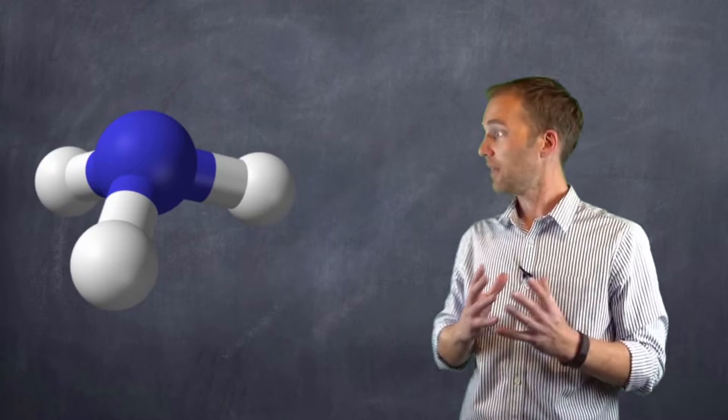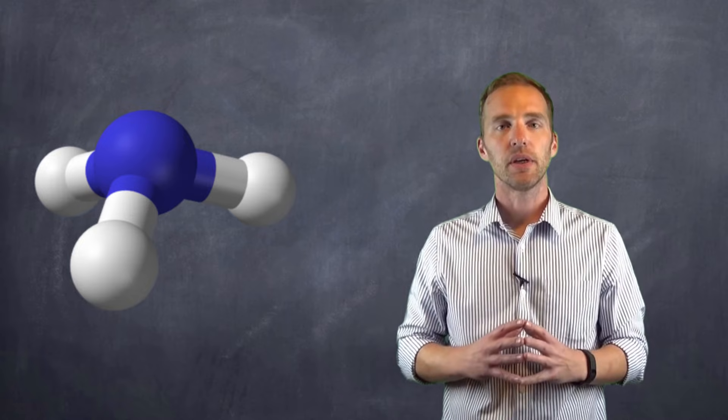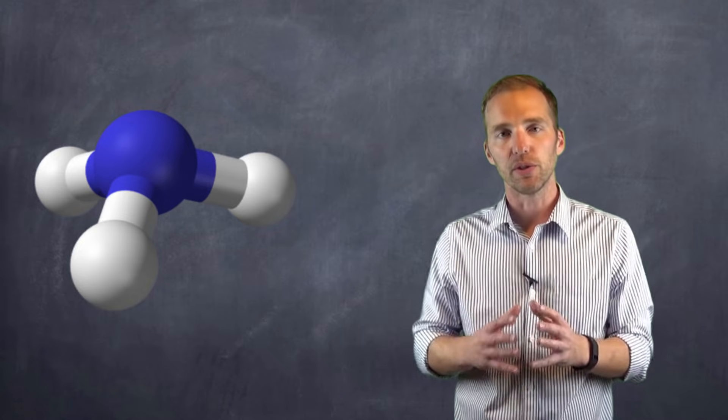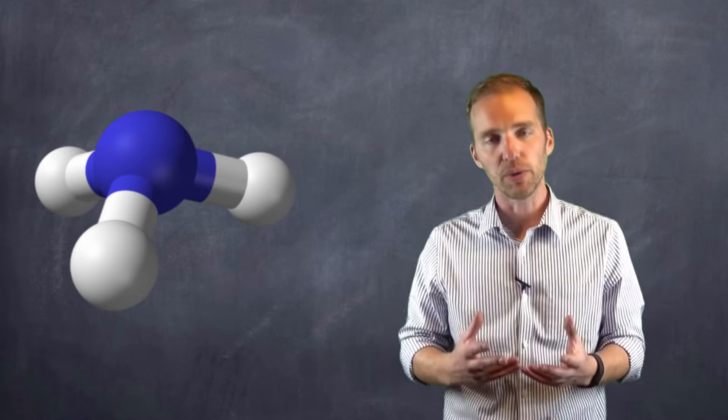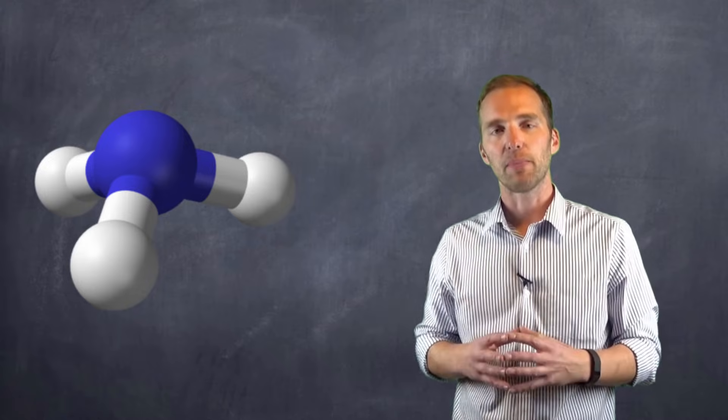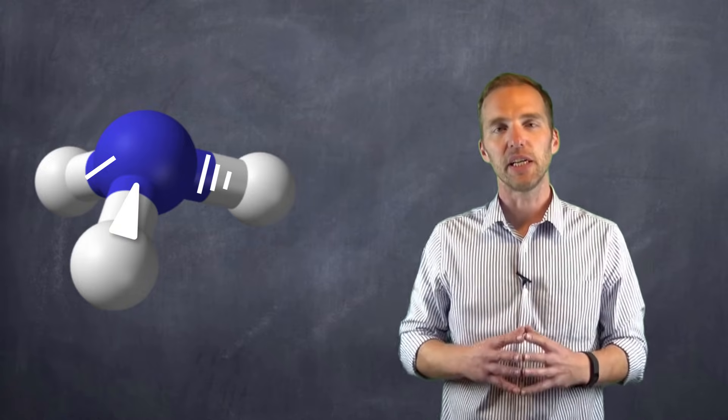And we're going to use, again, much like we did in the last video, ammonia to help us out. So the procedure that we are going to use is, first we have to go through and draw a Lewis structure, then we have to represent this in three-dimensional space, and as we can see here, we have an AX3E class molecule.